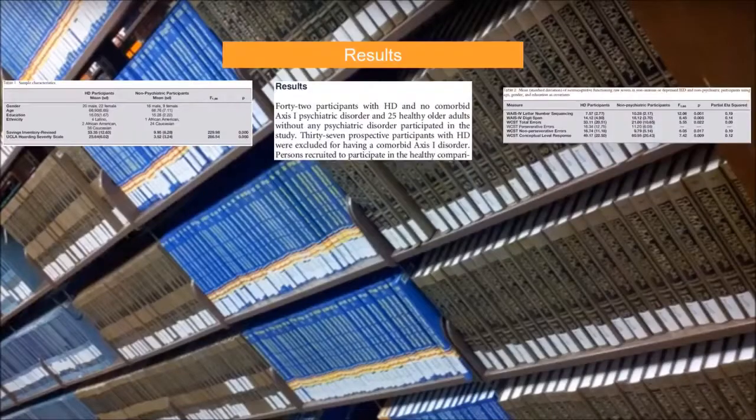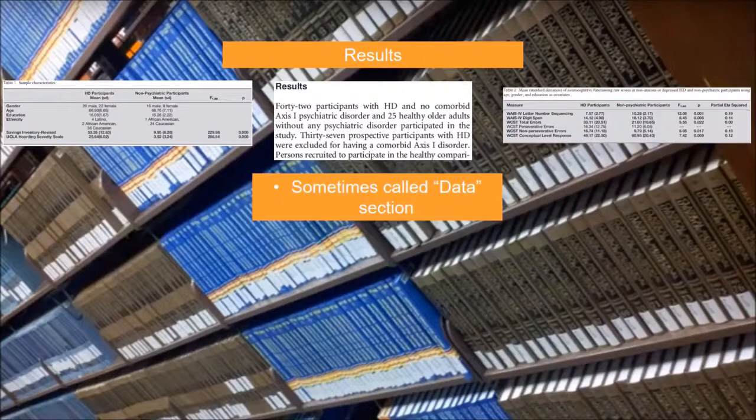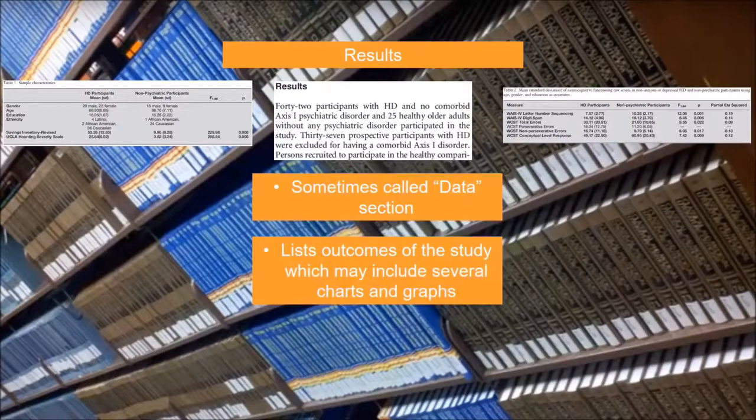The results section, which is also sometimes called the data section, lists what the outcomes of the study were. This can include numbers and measurements in various charts and graphs.